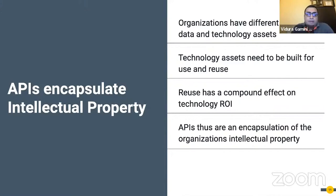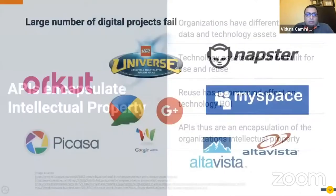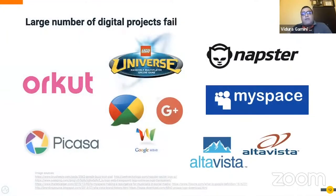Telcos have a lot of data about their customers — call data, location data, internet usage data, information about what sites consumers have browsed. Telcos can combine this data with market trends, environmental factors, and industrial trends to generate interesting insights about their consumer base. This data and these insights are their intellectual property. One of the key principles in the economics of APIs is that APIs must encapsulate something that is of intellectual property to the organization.